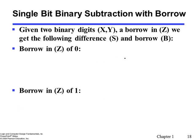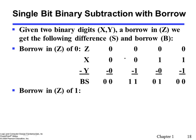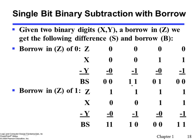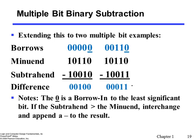Subtraction is similar for binary numbers as well. When there is no borrow, zero minus one gives one as a result but requires a borrow. In the presence of a borrow, the result is shown here. For multiple-bit binary subtraction — in the second case, zero minus one requires a borrow, giving the appropriate result, and we proceed just as in the decimal number system.